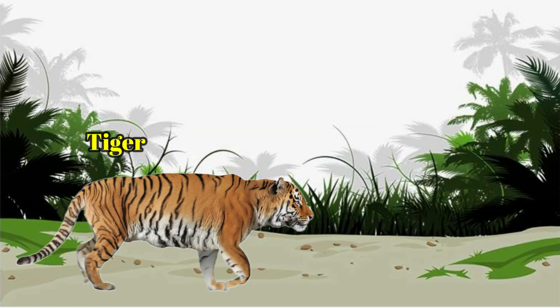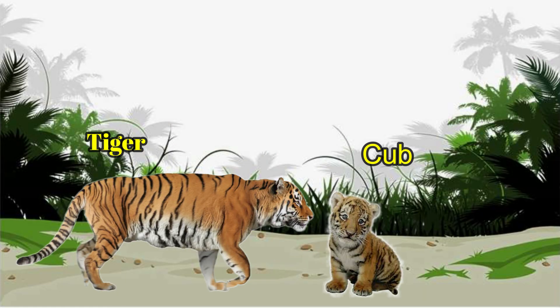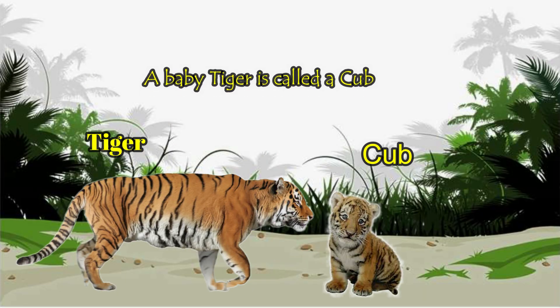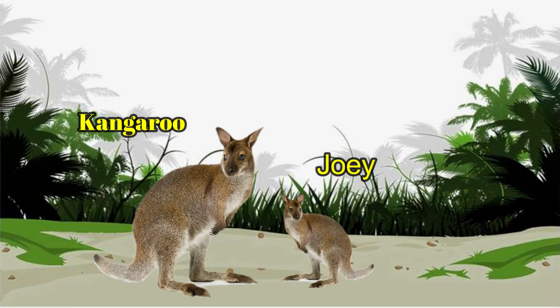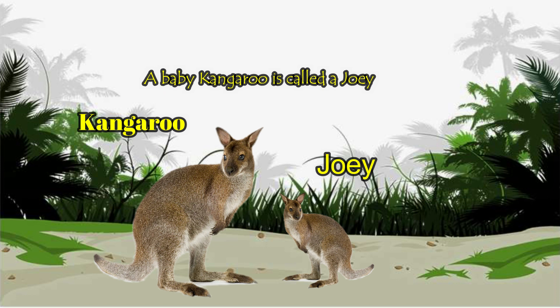Tiger. Cub. A baby tiger is called a cub. Kangaroo. Joey. A baby kangaroo is called a joey.